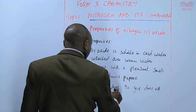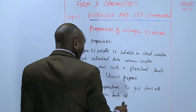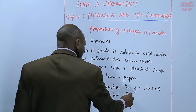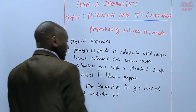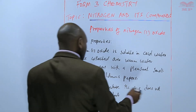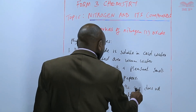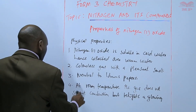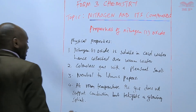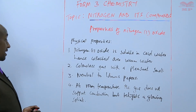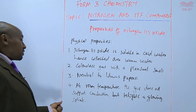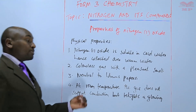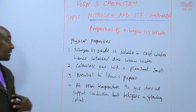But at higher temperatures, the gas relights a glowing splint, just like oxygen gas. It has some properties that are almost similar to oxygen gas. So in as much as at room temperature it does not support combustion, it relights a glowing splint when the glowing splint is introduced.